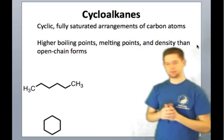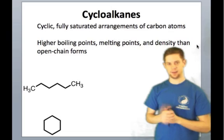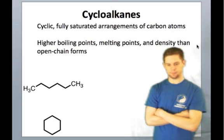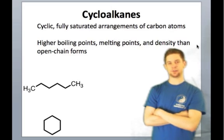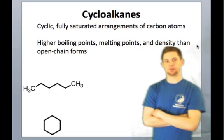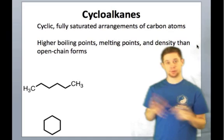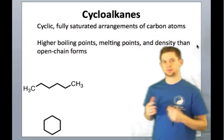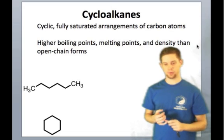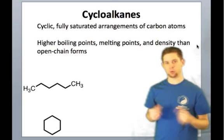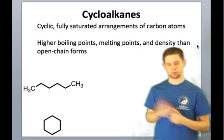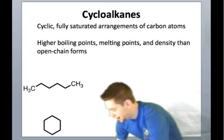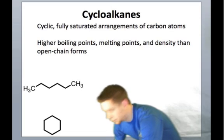At the bottom of this slide, you can see an example of cyclohexane and its open chain form hexane. The fact that they're cyclic gives them interesting physical properties that we can predict based on their molecular structure. They possess higher boiling points, melting points, and density than their open chain analogs. Cyclohexane, for instance, has a higher boiling point, higher melting point, and higher density than its open chain analog.